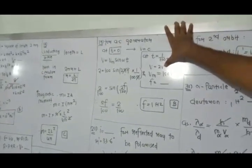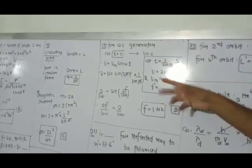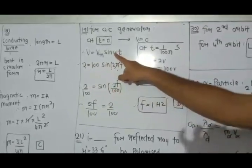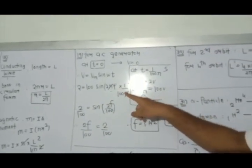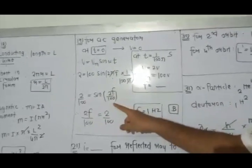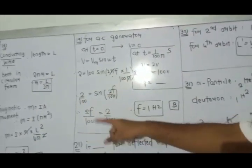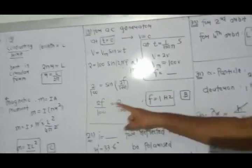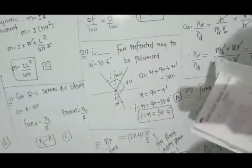Since voltage starts at 0, v = Vm·sin(ωt). At t = 1/(100π), v = 2 V and Vm = 100 V. So 2 = 100·sin(2πf × 1/(100π)) = 100·sin(2f/100). Since the angle is very small, sin(θ) ≈ θ, giving 2f/100 = 2/100, so frequency f = 1 Hz. Option B.